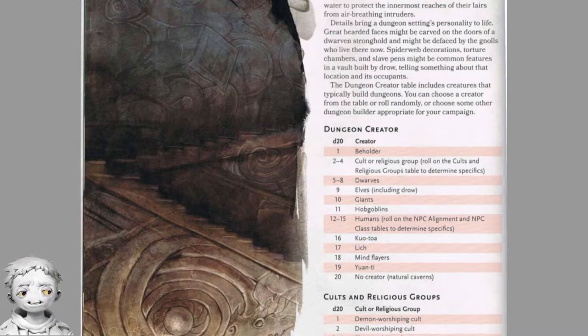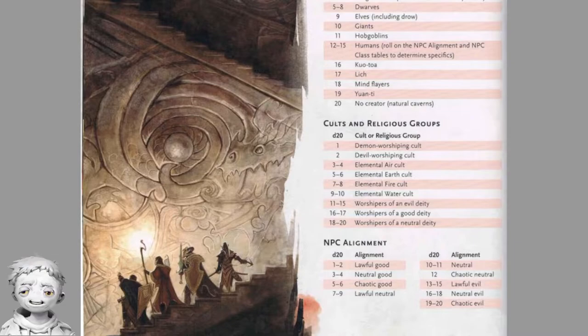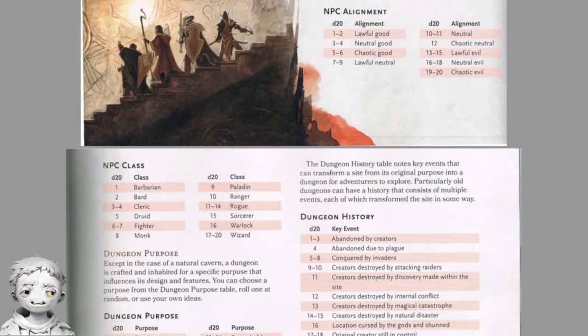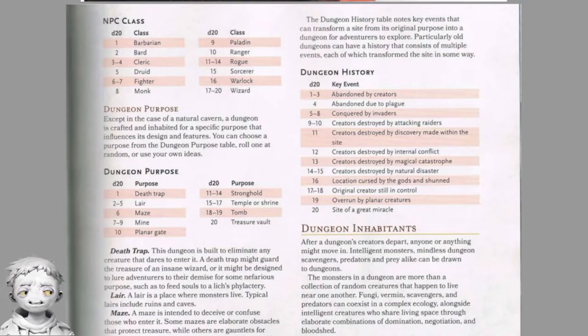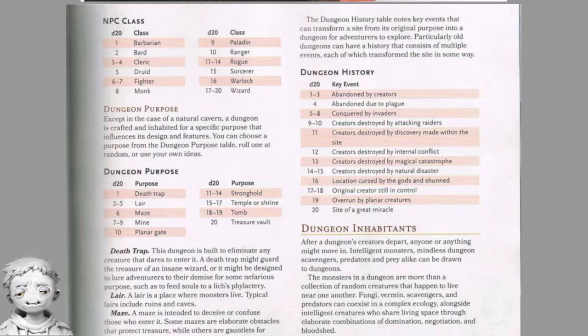So chaotic neutral is the rarest of them all. Chaotic neutral people apparently don't build dungeons, or seldom build dungeons. If you're chaotic neutral, you're about half as likely to build a dungeon as any other alignment — interesting statistically for the world of D&D.